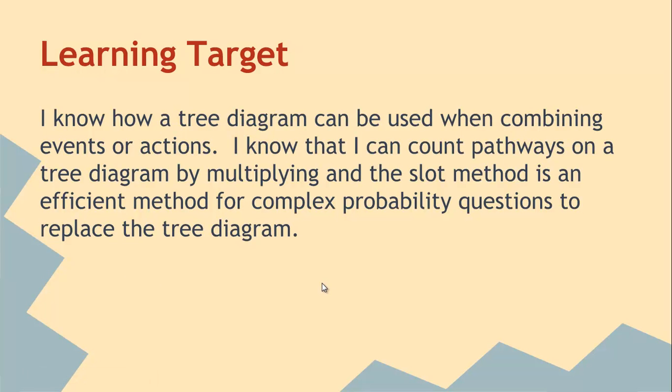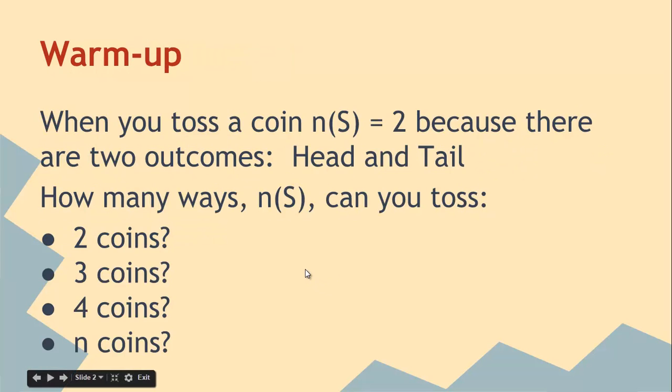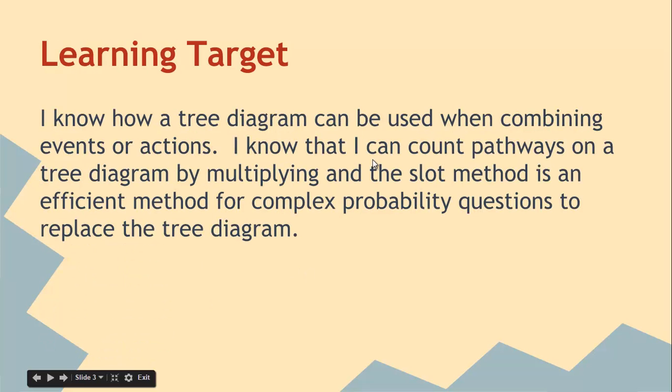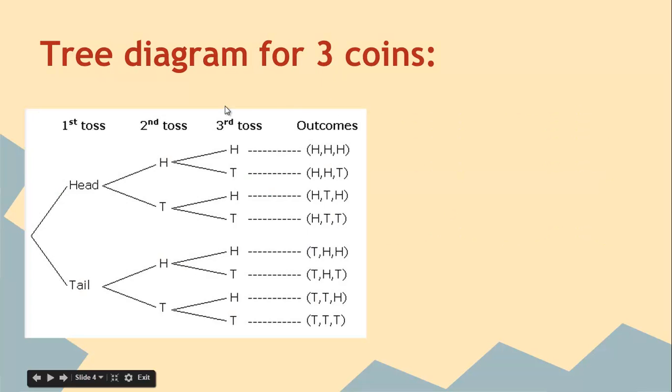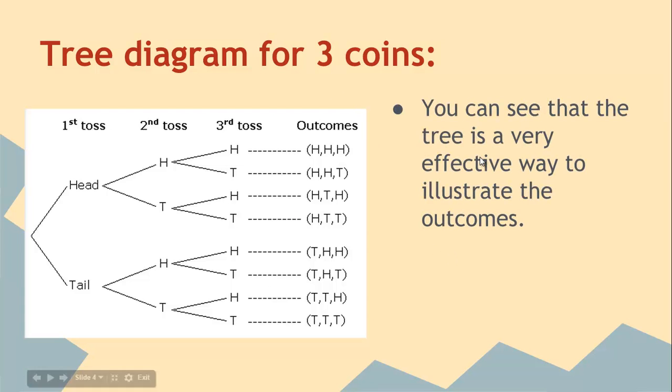So the learning target is: I know a tree diagram is used to combine events or actions, and we can count pathways by multiplying. The slot method is a really efficient way to replace the tree diagram. The tree diagram for three coins would look like this, so head or tail is the first, and then after you flip a head or a tail, you could flip head or tail. What we've shown here is all eight different outcomes and the pathways through the tree to find the outcome. It's a really efficient way to count that we have eight outcomes.